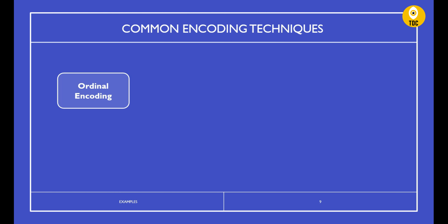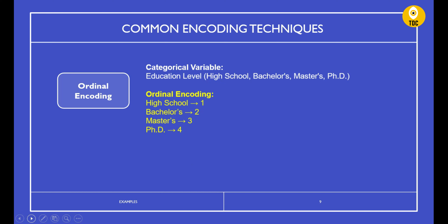Finally, ordinal encoding is similar to label encoding in that it assigns a numerical value to each categorical value. However, the key difference is that ordinal encoding is based on a rank or order. For example, for education level: high school = 1, bachelor's = 2, master's = 3, because the ranking follows qualification order. In label encoding there is no such ranking requirement — you can assign any integer to any category.